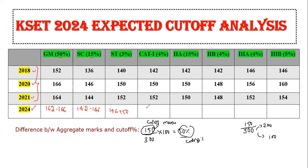For category 1, the expected cutoff is 146 to 150. I'm keeping similar marks because you can see 2021 was 152 and 2020 was 150 for ST; category 1 was also 152. Marks may vary by 2 to 4 marks less or more. For 2A, it is 144 to 148; for 2B, also 144 to 148; for 3A, 150 to 156; and for 3B, 152 to 156.